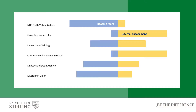At the very top of the table, we have our NHS Forth Valley Archive, which is a well-catalogued collection of hospital records popular with family historians who like to come in person to the reading room to carry out genealogical research. In total contrast, we have our Peter Mackay archive, which is a collection of international interest that I'll come back to later. You can see how engagement with these collections differs.